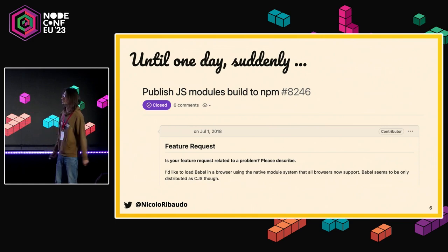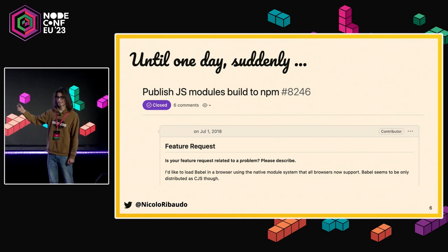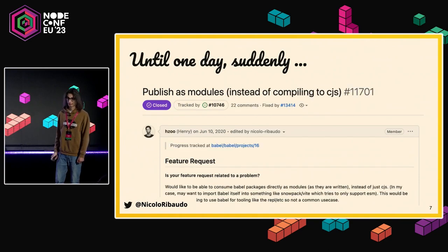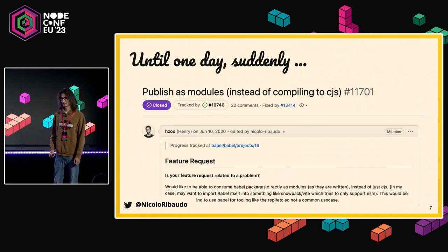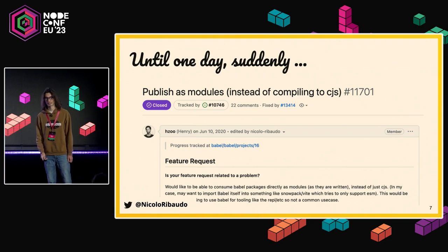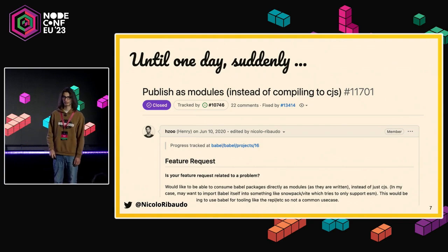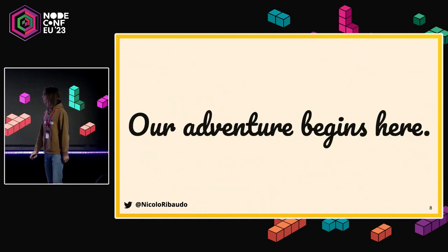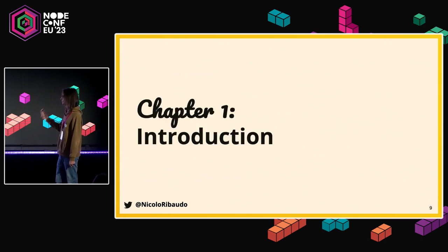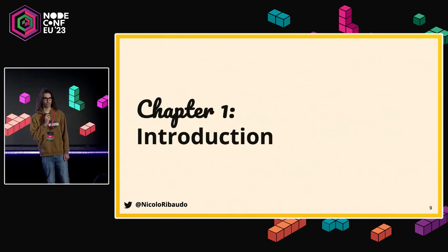This is a common shared experience in open source JavaScript projects, and it's fun to see this all started already in 2018. At some point a core team member of Babel decided to actually do this migration, for reasons such as dependencies upgrading to ESM and wanting to use the new module system. That's where this talk starts — Chapter 1: Introduction.